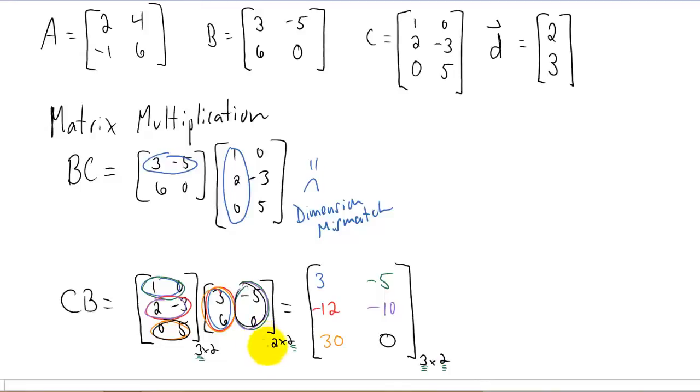I also want to note that for this matrix multiplication to actually work, the inside two dimensions of your two matrices have to match up. That is why we couldn't do this matrix multiplication up here. We had a two by two times a three by two. And our inner dimensions of those two matrices were not the same, so we couldn't do it.